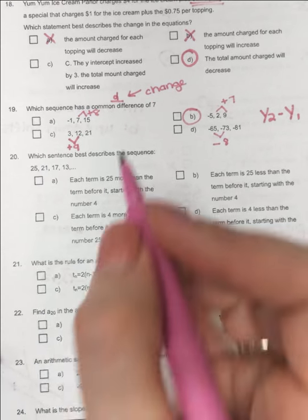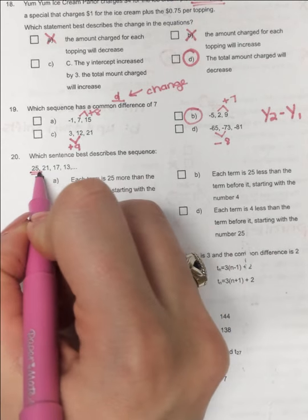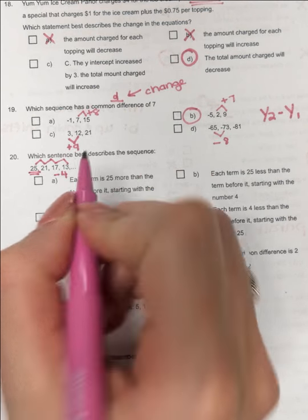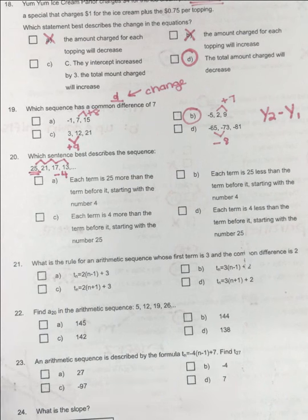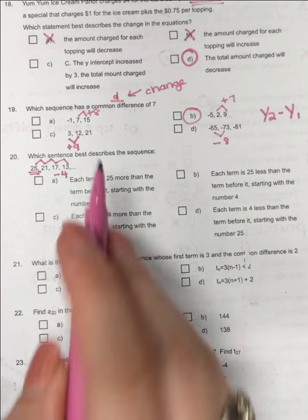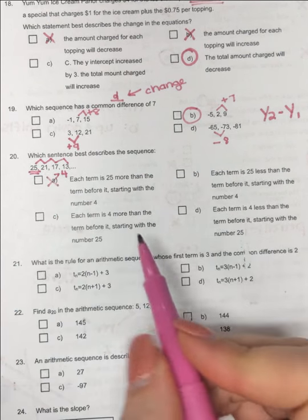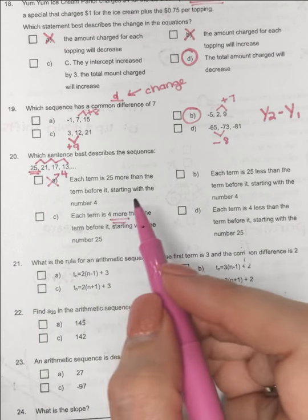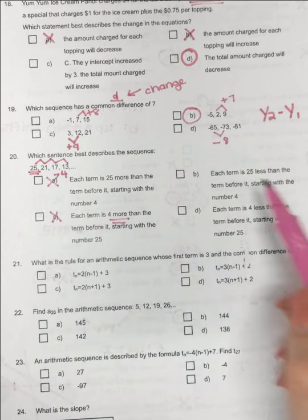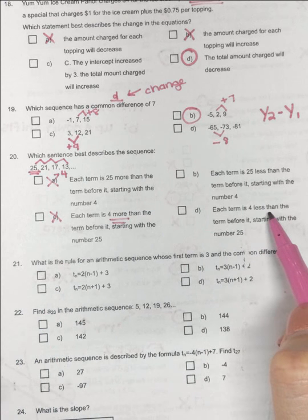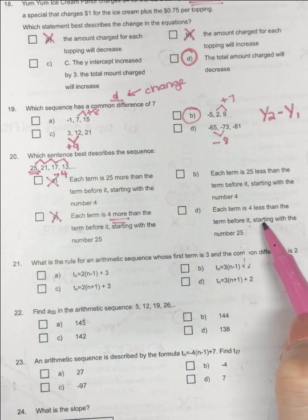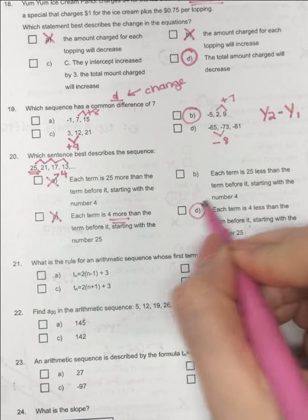Which sentence best describes the sequence? So, it is starting at 25, and to get to the next term, I am subtracting 4. So, each term is 25 more. No, 25 is the start. Each term is 4 more. If it's subtracting, is it going to be 4 more? No. Each term is 4 less, yes, that's subtracting 4, than the term before it, starting with the number 25. That's your answer.